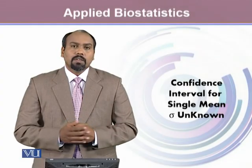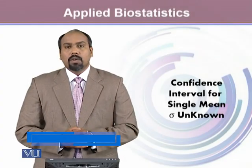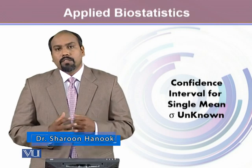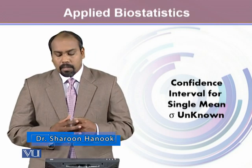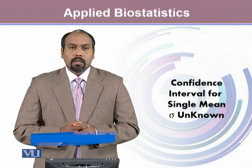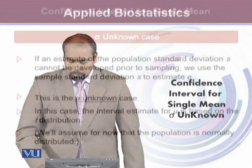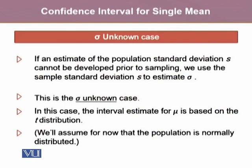In this module, we will look at the estimation of the confidence interval for single mean when the population standard deviation is unknown, which is mostly the case. If an estimate of the population standard deviation cannot be developed prior to sampling, we use the sample standard deviation S to estimate sigma. This is the sigma unknown case, and the interval estimate of mu is based on the t distribution. We will assume that the population is normally distributed.